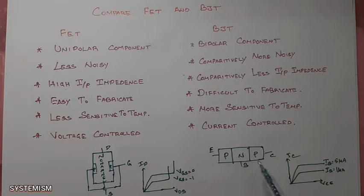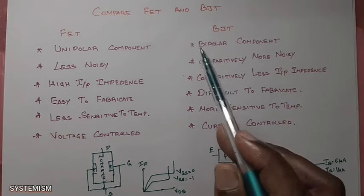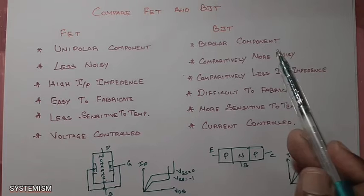Due to this the electron will also move, hole will also move. So there will be a movement of both majority and minority charge carriers for this operation. That is why this is called a bipolar component.